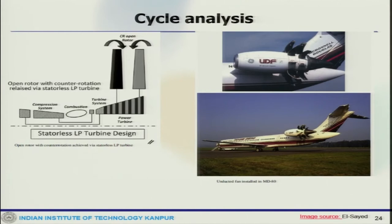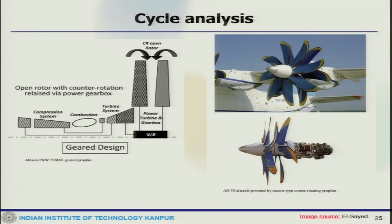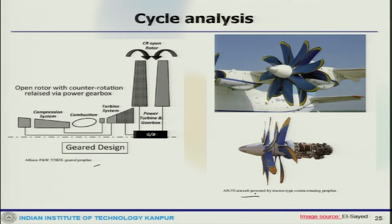Pratt and Whitney also produced engines of this propeller fan type. One example is the Pratt and Whitney 578-DX from the 1980s, which has a reduction gearbox between the LP turbine and propeller blades. The D-27 propeller fan was developed by the USSR and is used to propel the AN-70 aircraft.